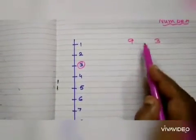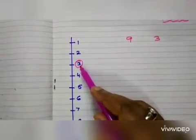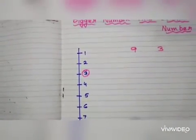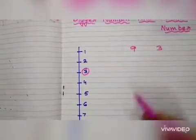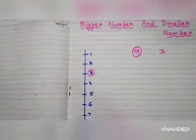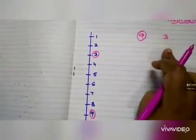See here. Here it is 3. 3 comes first. Then after that which number is coming? 9. Then which number is the bigger number? 9 is the bigger number. And 3 is the smaller number.